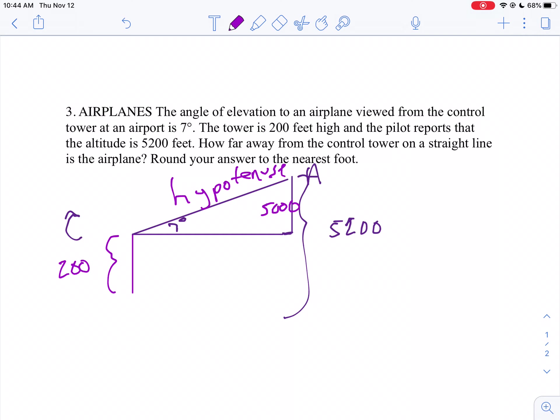Now, look at your problem. We have 7 degrees. Opposite of 7 is 5,000. We're looking for the hypotenuse. So to me, opposite hypotenuse, so SOHCAHTOA.